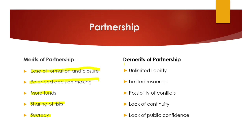Now the demerits of partnership. The first and most important demerit is unlimited liability — to repay debts, partners have to put up their personal properties and personal assets. So the liability of the partners is unlimited.